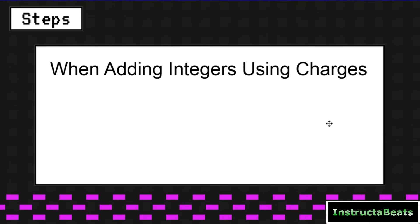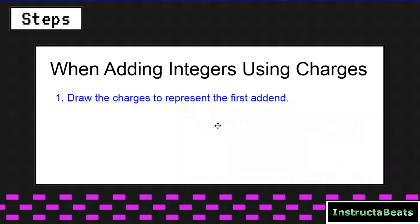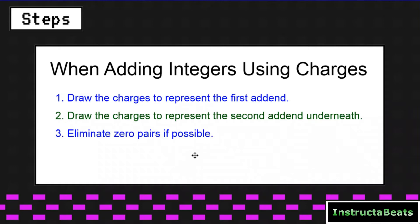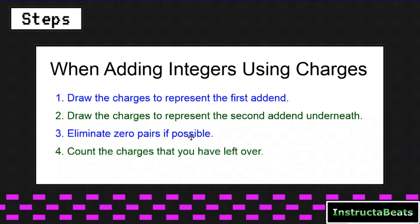So how can we use charges or counters to help us understand adding integers? Here are our steps. Step one: draw the charges to represent the first addend — that first number we're starting with. Step two: draw the charges to represent the second addend directly underneath, and I'll show you why that's important. Step three: eliminate zero pairs if possible. Step four: count the charges or counters you have left over after eliminating those zero pairs.